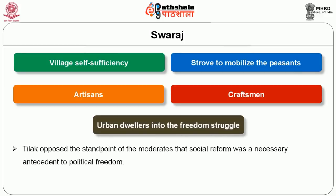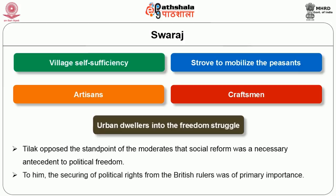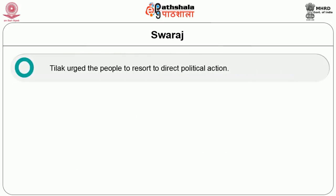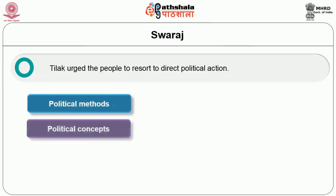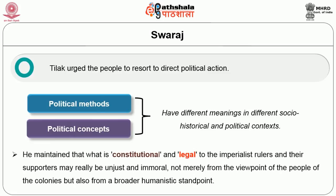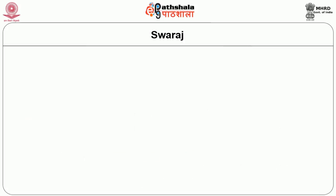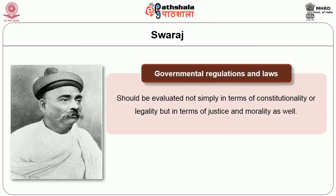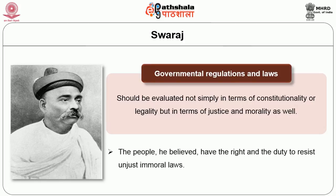Tilak opposed the standpoint of the moderates that social reform was necessarily an antecedent to political freedom. To him, securing a political rise from British rule was of primary importance. He feared that any emphasis on social reform would lead to social schisms and to greater bureaucratic interference by the colonial administration. Tilak urged the people to resort to direct action. He believed that political methods and political concepts have different meanings in different socio-historical and political contexts. He maintained that what is constitutional and legal to imperialist rulers might really be unjust and immoral not merely from the standpoint of the colonised but also from a broad humanistic standpoint. Government regulations and laws should be evaluated not simply in terms of constitutionality and legality but in terms of justice and morality as well. The people had the right and the duty to resist unjust and immoral laws.